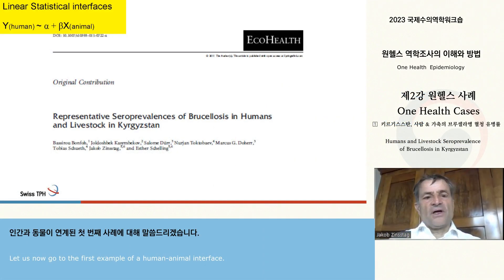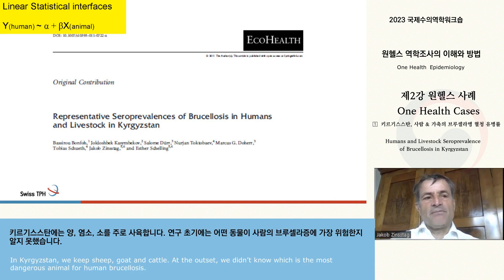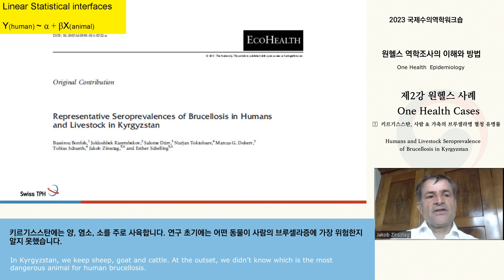Let us now go to the first example of an animal-human interface. We wanted to know how much the human seroprevalence of brucellosis depended on livestock in Kyrgyzstan. In Kyrgyzstan, we keep sheep, goats and cattle. But at the outset, we don't know which is the most dangerous animal for human brucellosis.